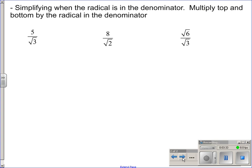So, in this first example, 5 divided by the square root of 3, what we're going to do is multiply the top and bottom by the square root of 3. Square root of 3 divided by square root of 3. Anytime you take a number and divide it by itself, it's 1. So, what we're doing is just multiplying by 1. So we're not changing the value. We're just going to make it look different.